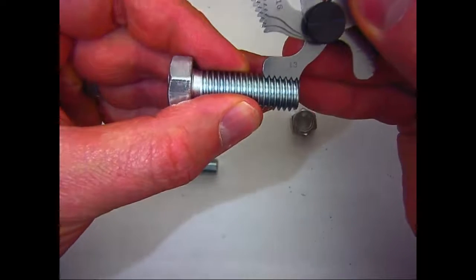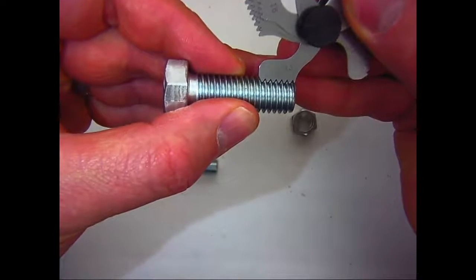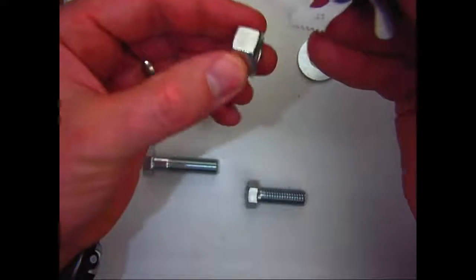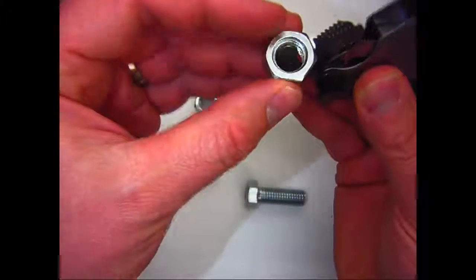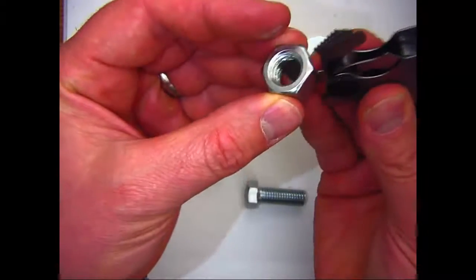So this bolt would be classified as a half inch hex head bolt with 13 TPI. The same thing can be done with the internal threads, as in the case with these nuts.